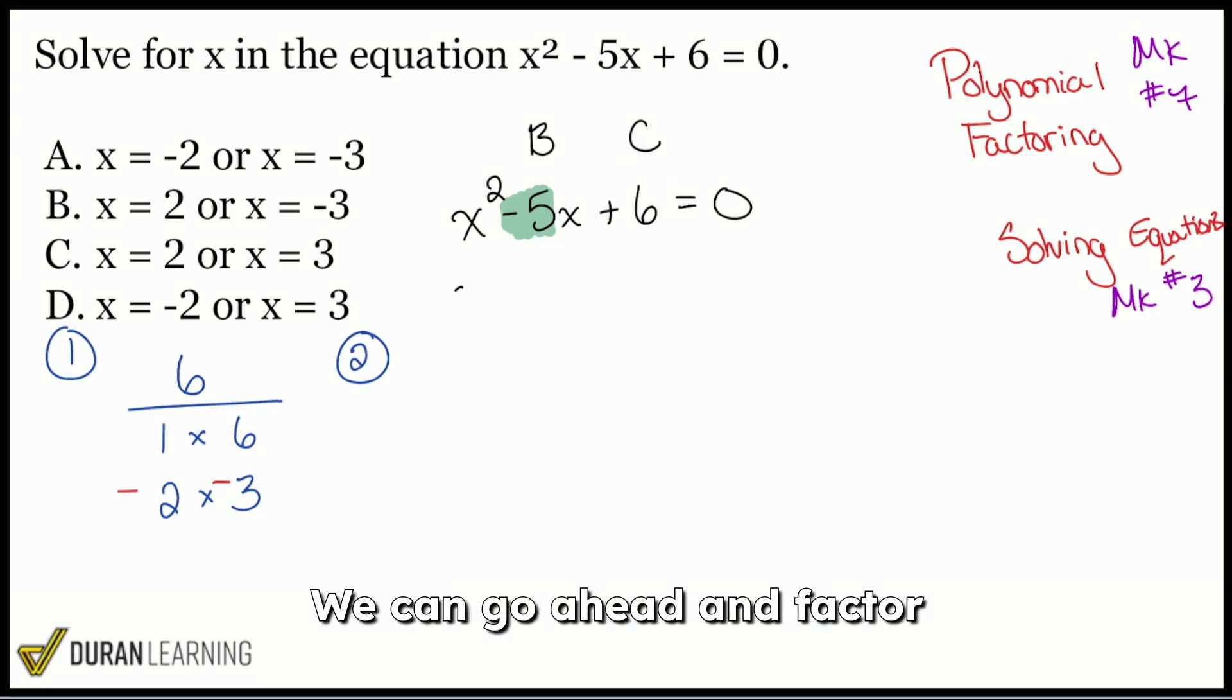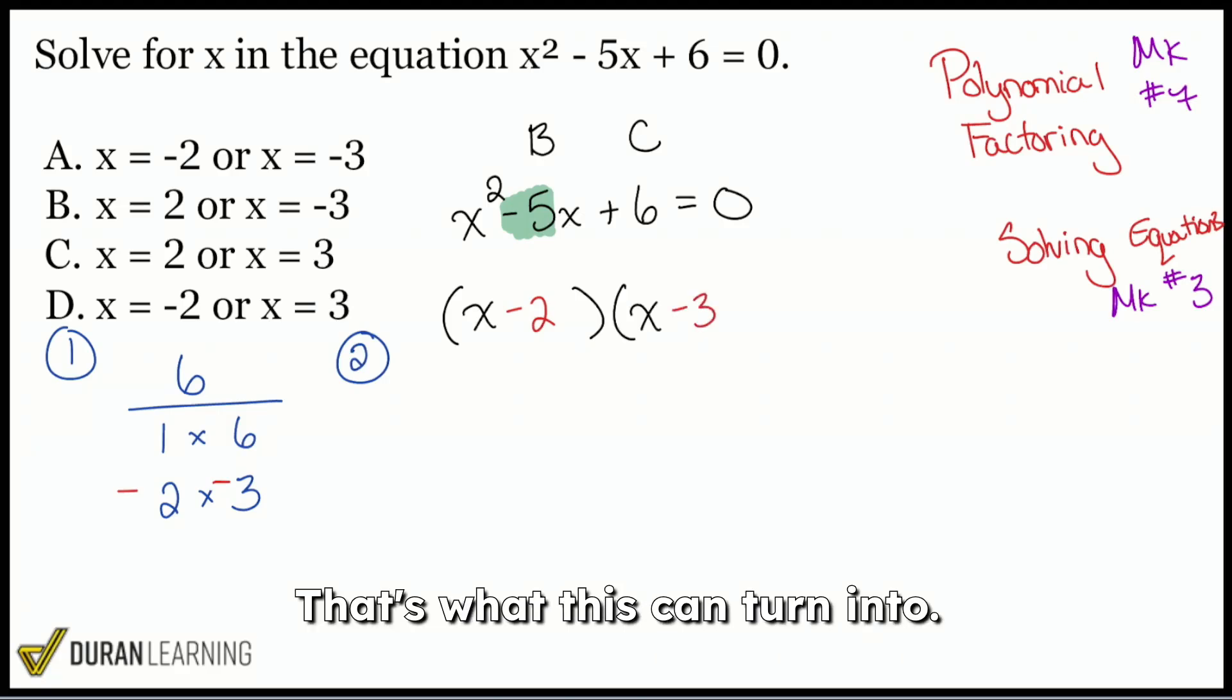We can go ahead and factor this now to (x - 2) and (x - 3). That's what this can turn into.